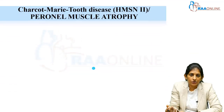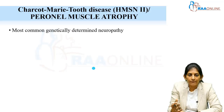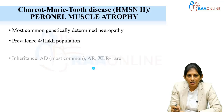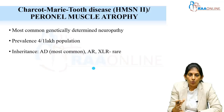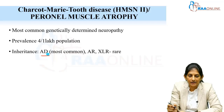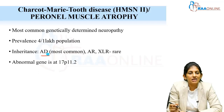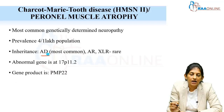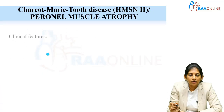First we will talk about Charcot-Marie-Tooth disease, because this is the most common of all peripheral neuropathies. Prevalence is around 4 in 1 lakh population. Most commonly it is a familial disorder, inherited in an autosomal dominant pattern. The abnormal gene is at chromosome 17p11.2 and the product is PMP22.